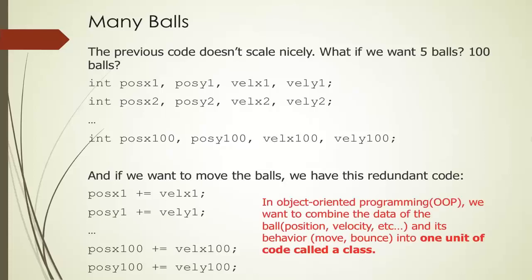So in object-oriented programming, we want to combine the data or the state of the bar — which is the position, the velocity, the radius — and its behavior, which is moving, bouncing, displaying on the screen. We combine all those attributes and properties of the bar into one unit of code called a class. The nice thing about a class is that we will not have to repeat the same code over and over again. Instead, we can reuse our code instead of rewriting our code.